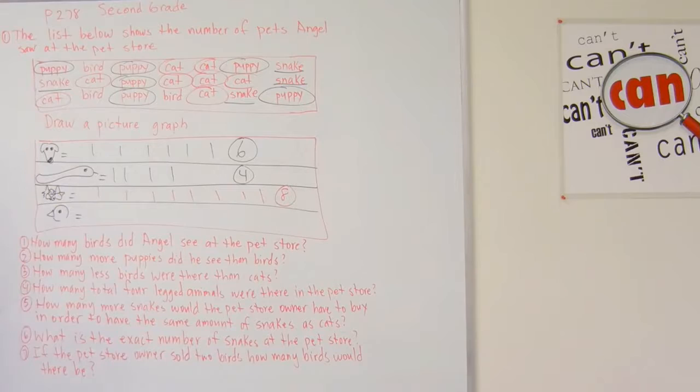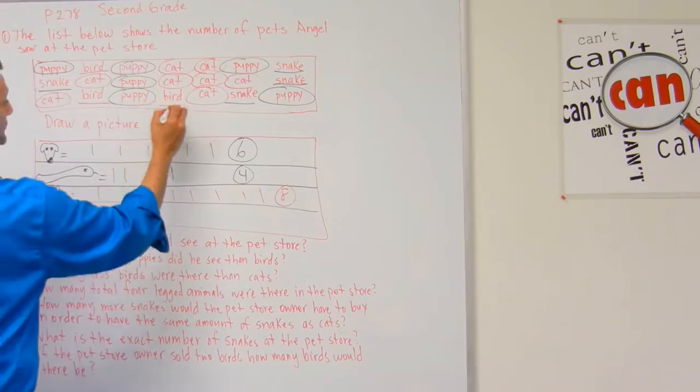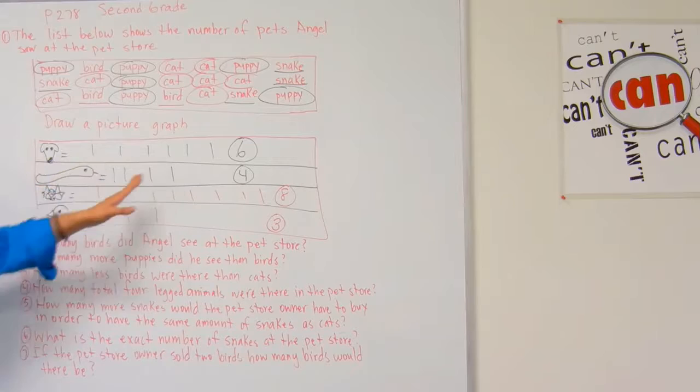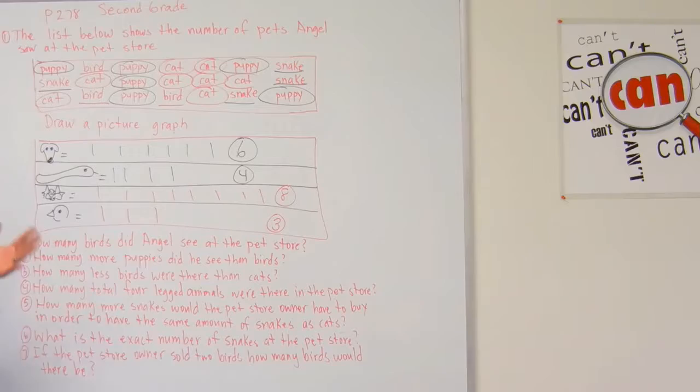And finally, let's take a look and see how many birds we have. We've got one, two, three — I've got three birds. So now that we have the data, and because this is a picture graph, I would typically draw pictures of these animals here, but you can go ahead and please draw pictures of these animals.